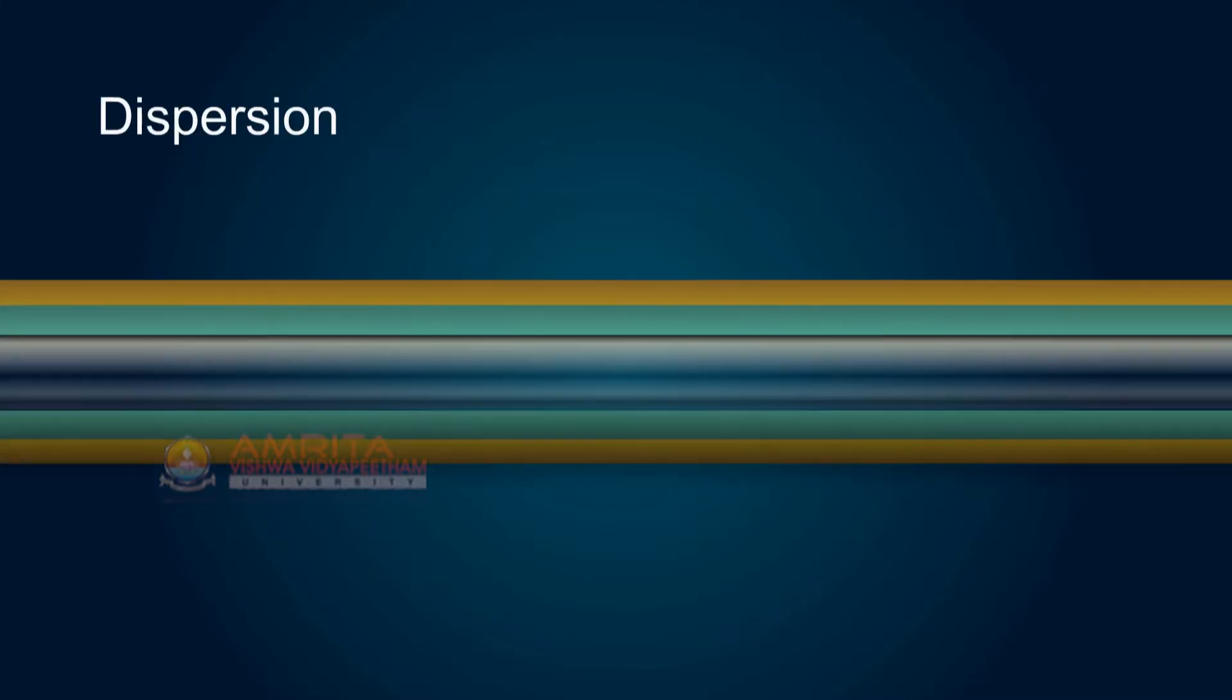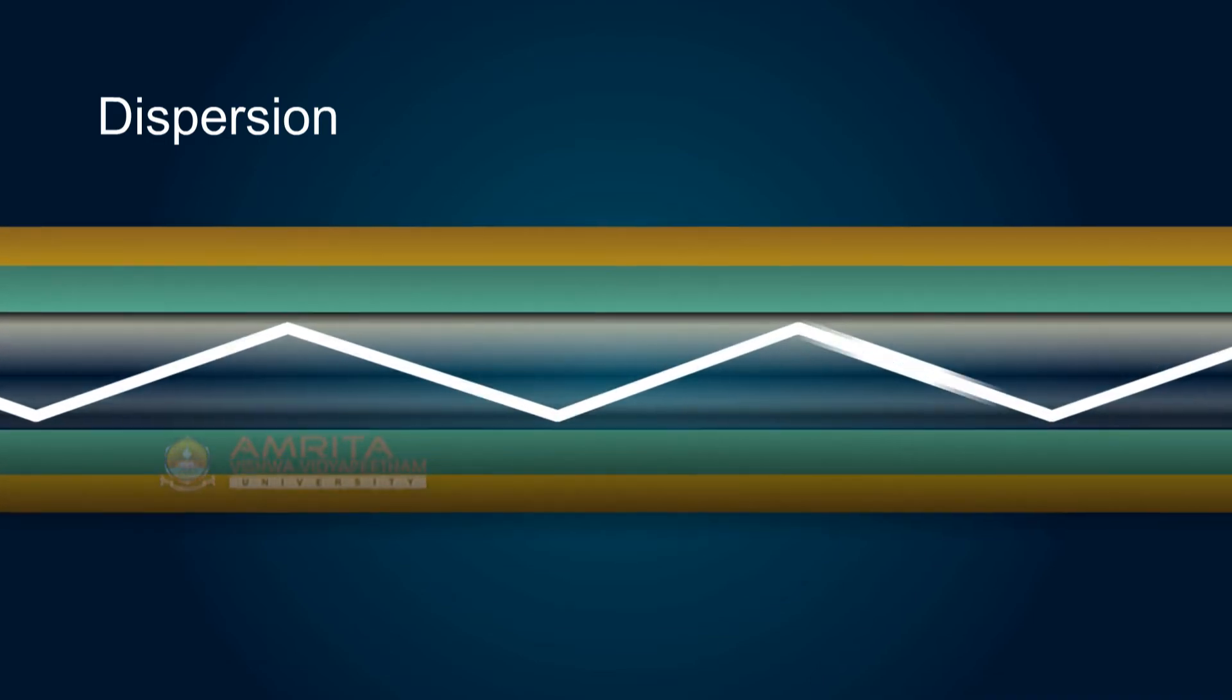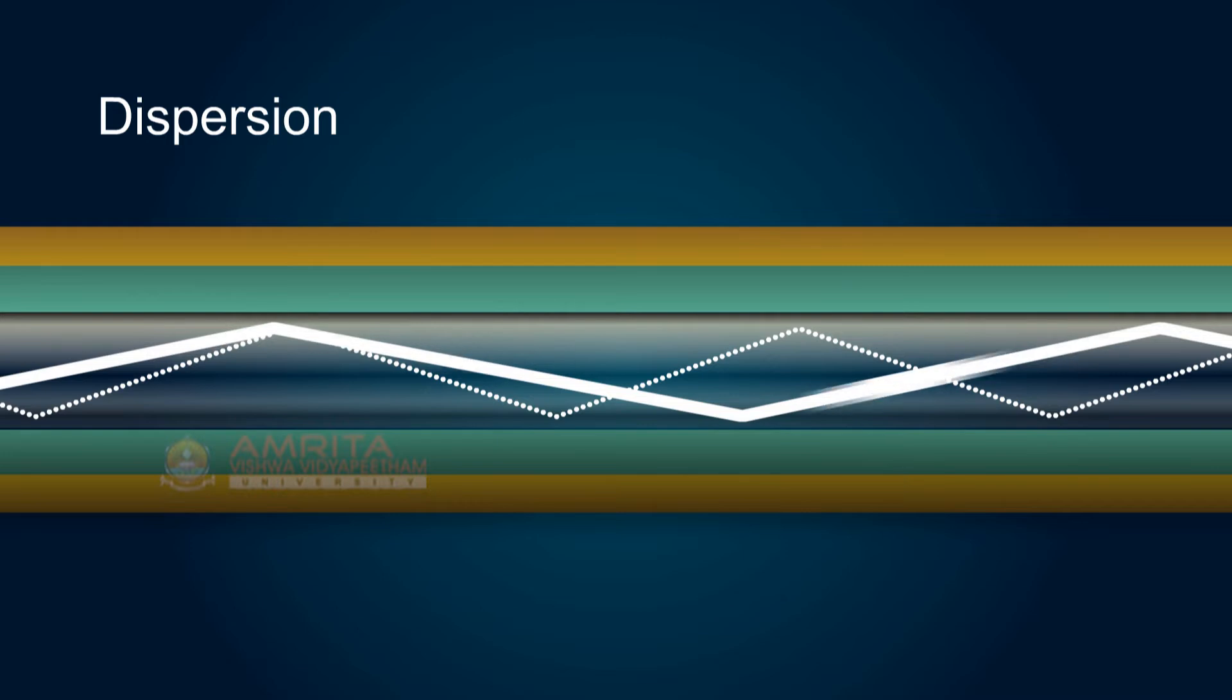Dispersion: As an optical signal travels along the fiber, sometimes the pulses broaden due to various reasons and get distorted. This is called dispersion.